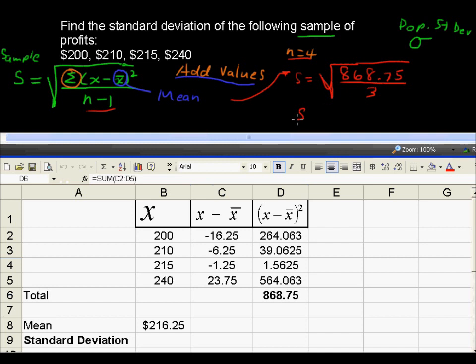And the standard deviation then of these values does have the same label as the original numbers. So the standard deviation is $17.02.